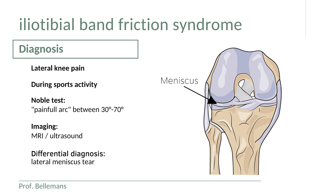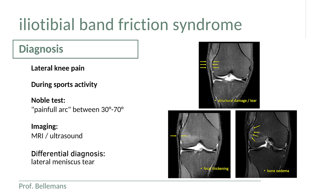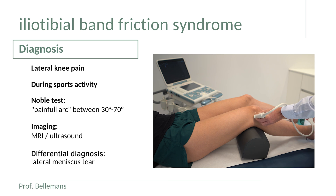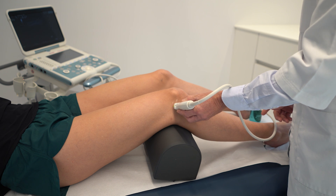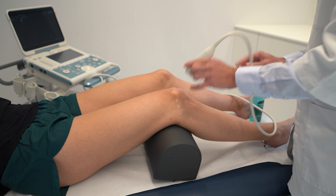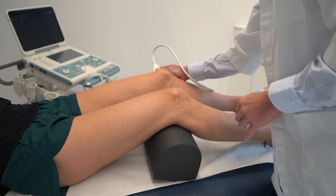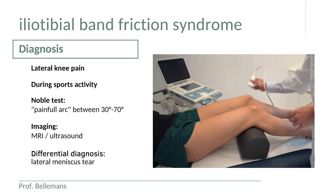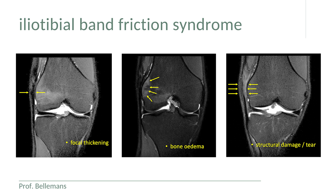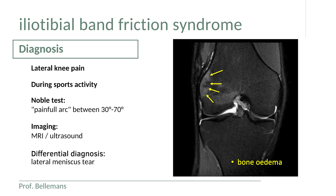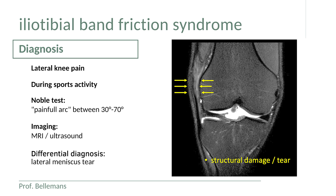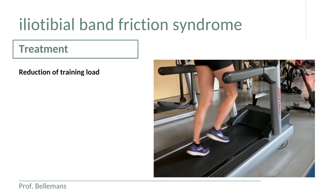To exclude a meniscus problem we usually perform an MRI, on which we can easily see how much the ITB is damaged or inflamed. Ultrasound examination can also detect small thickening or small fluid invasion in the ITB, especially when compared with the contralateral healthy side. MRI examples of ITB friction cases show a range from subtle alterations to obvious findings such as focal thickening of the ITB, bone edema on the lateral epicondyle due to friction, and in severe cases structural damage and even tearing of the ITB.